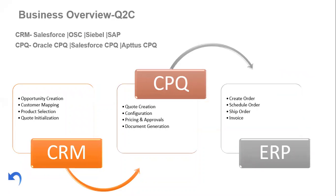This business process — code-to-cash — specifically explains how data and integration happen from upstream to the ERP system. In an organization, when any customer comes and deals with a product or with the sales team, all the activities happening in CRM — the customer relationship management tool — flow through to downstream. All the configured opportunity deals from CRM and CPQ will be passed to downstream ERP systems for next-stage data processing.